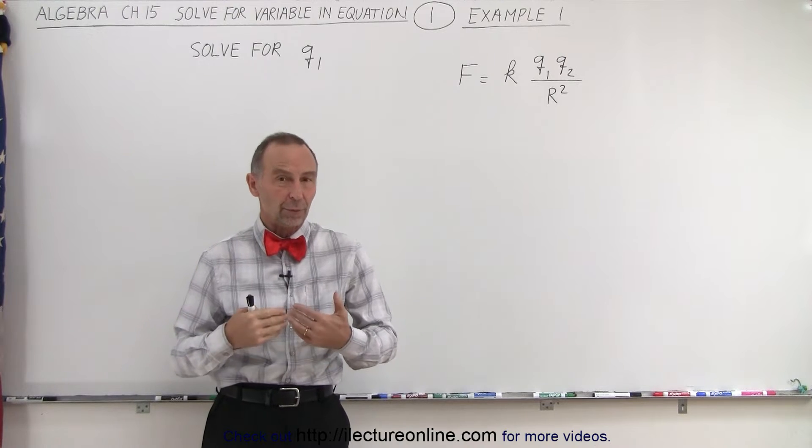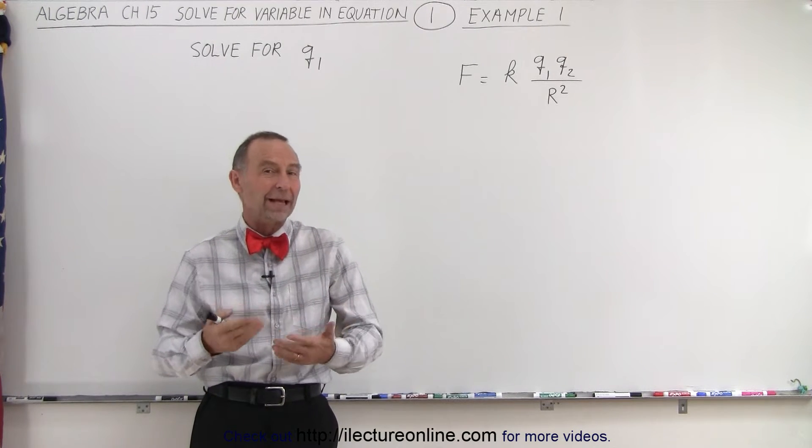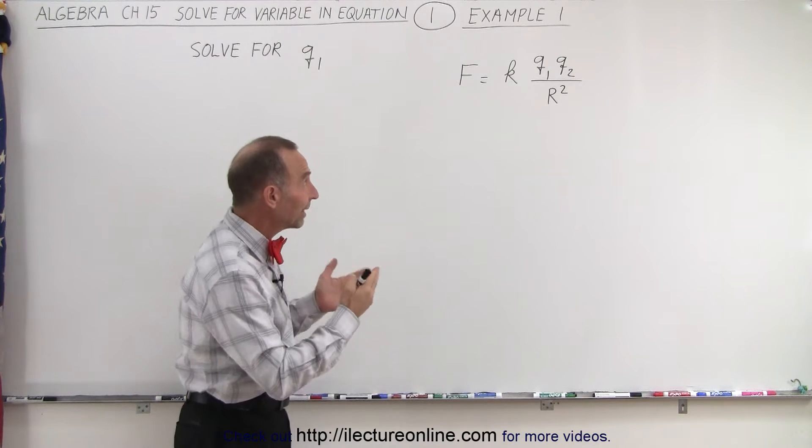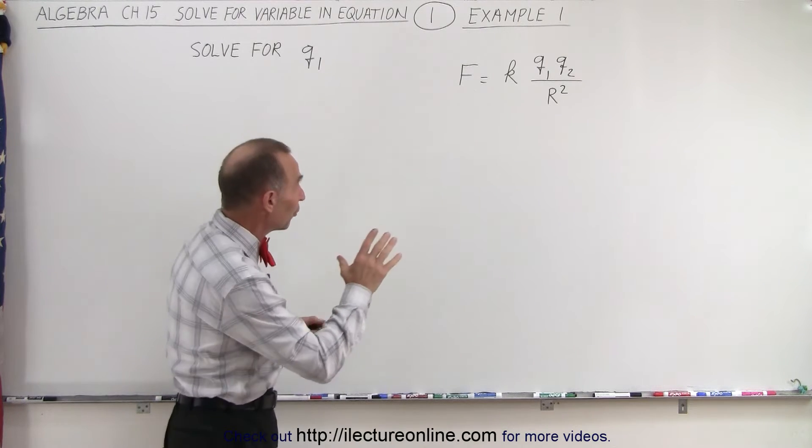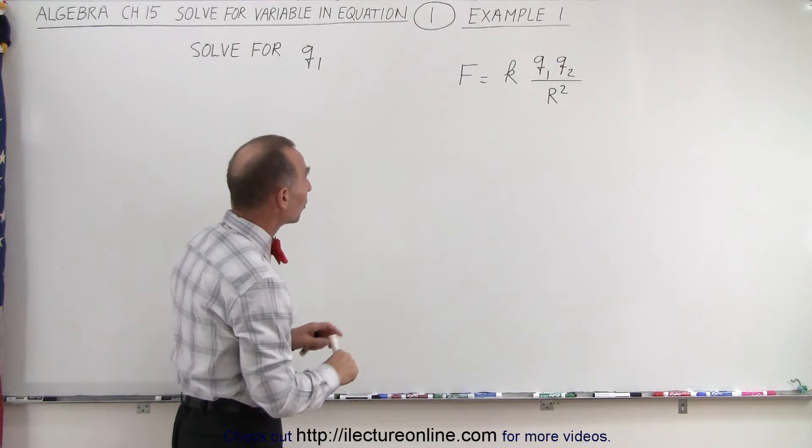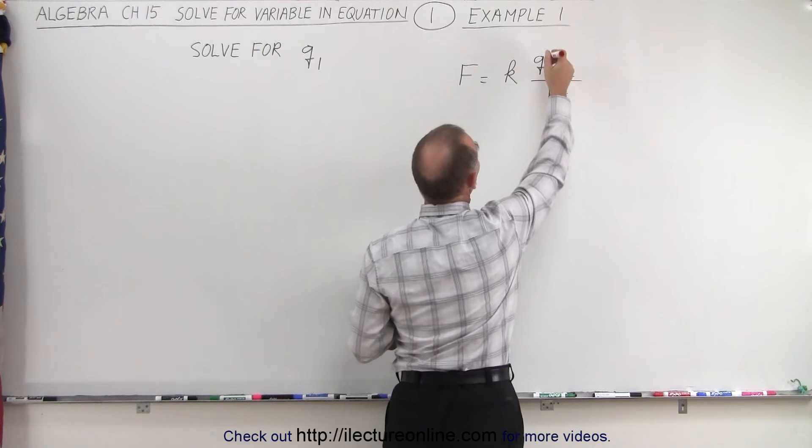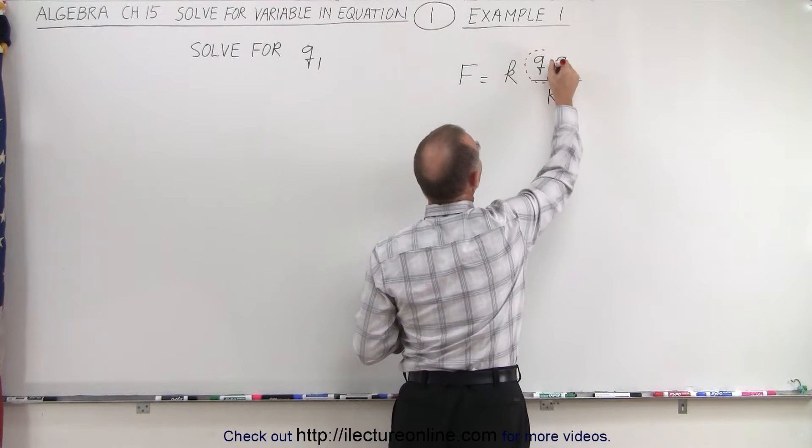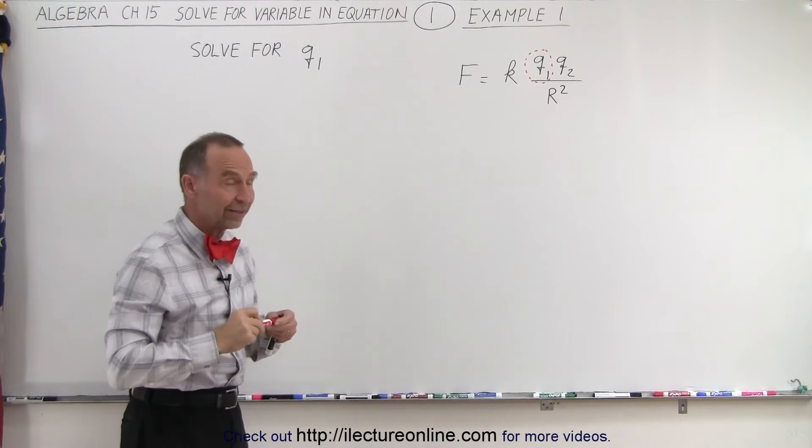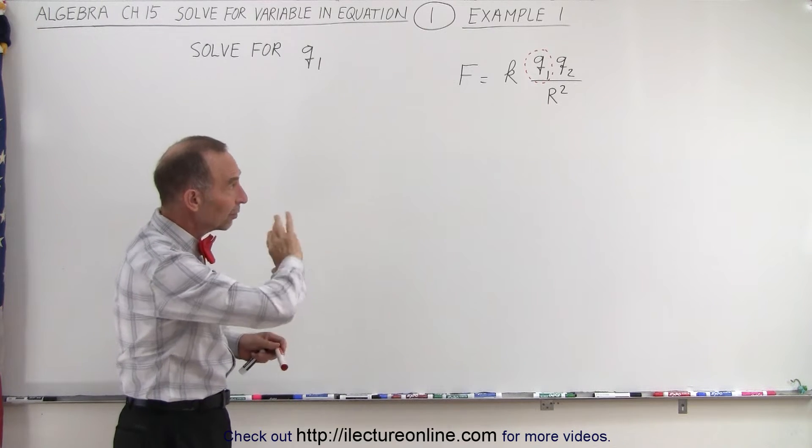Now that we've dealt with rational expressions, our equations are going to get the format of rational expressions. When we have an example like this, notice we first should identify which variable we're solving for. So in this case, we're solving for Q1, and it's not a bad idea to kind of indicate it by putting a little circle around it. That's the variable I'm trying to isolate. So I want to have Q1 equals everything else.